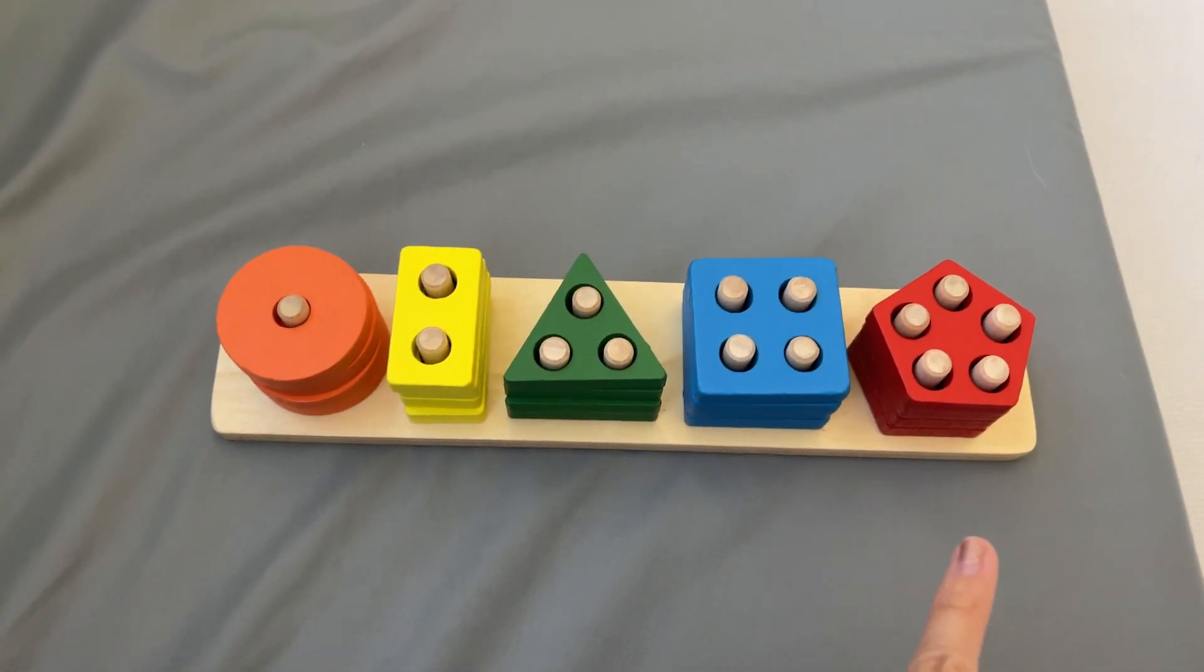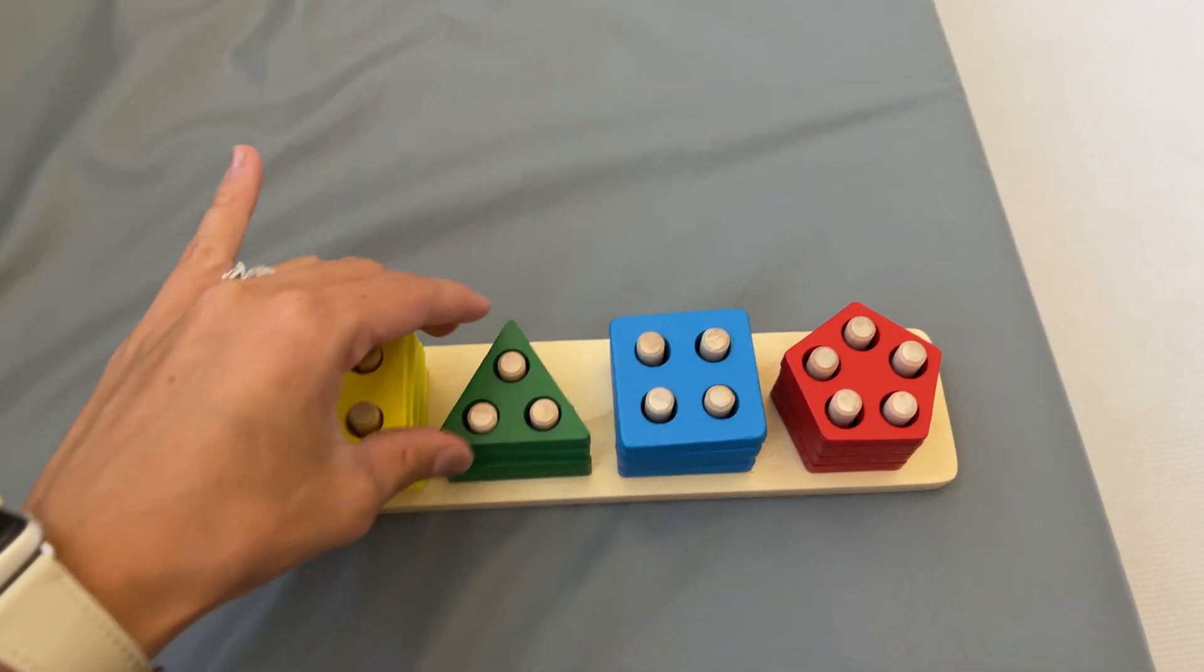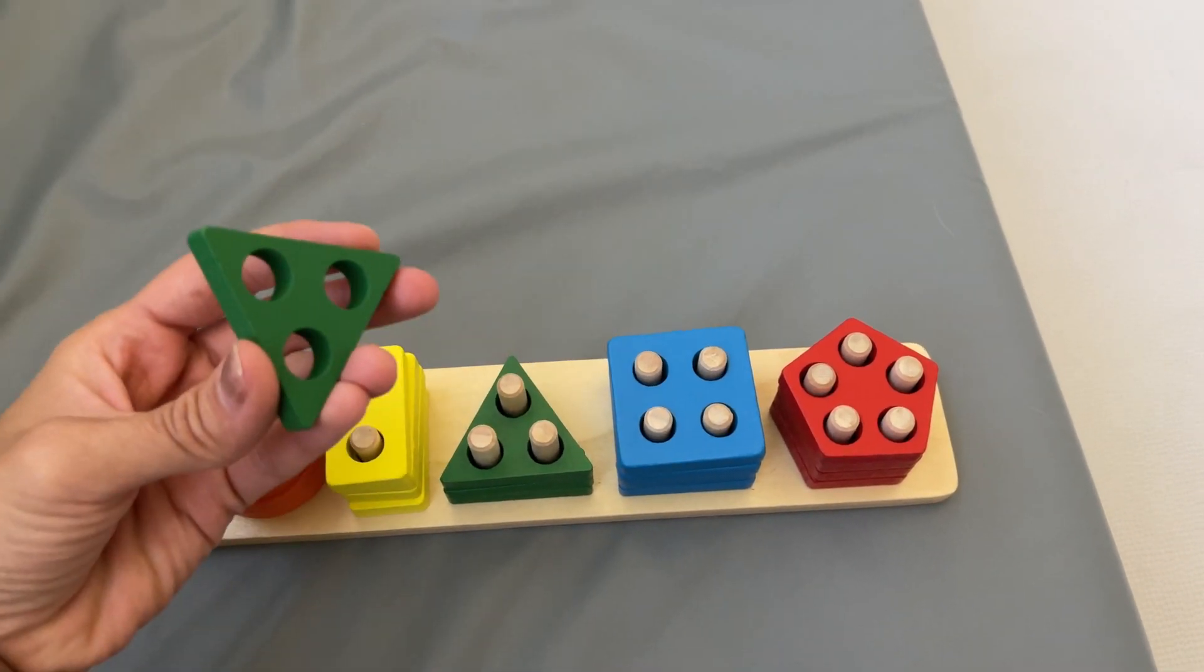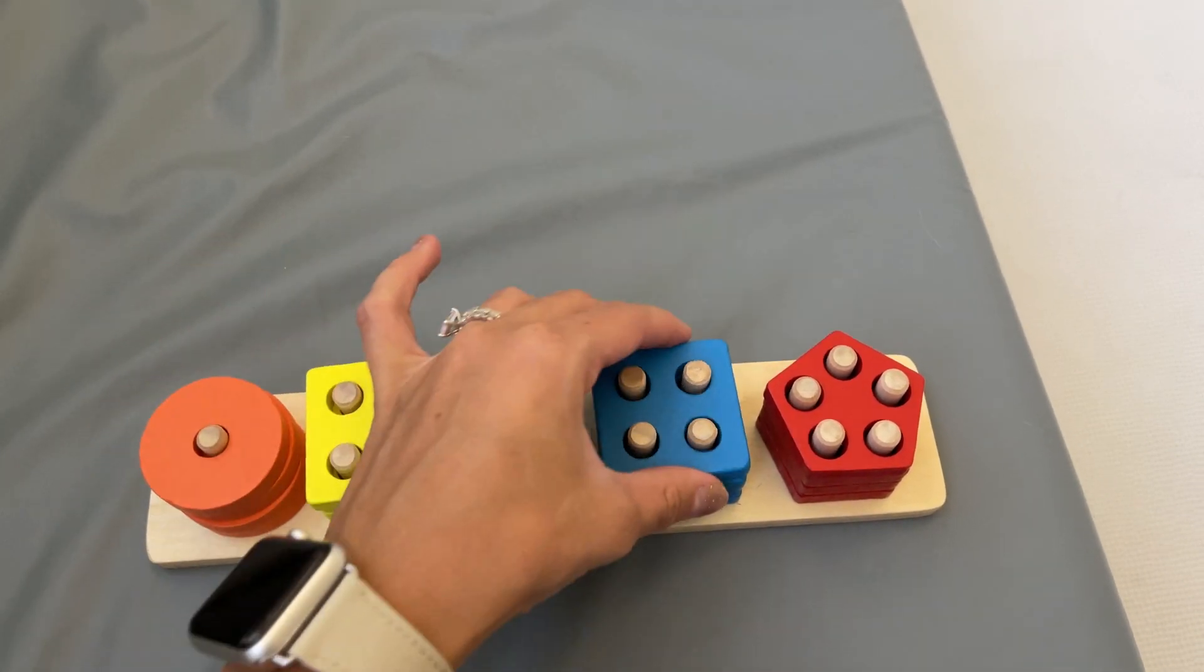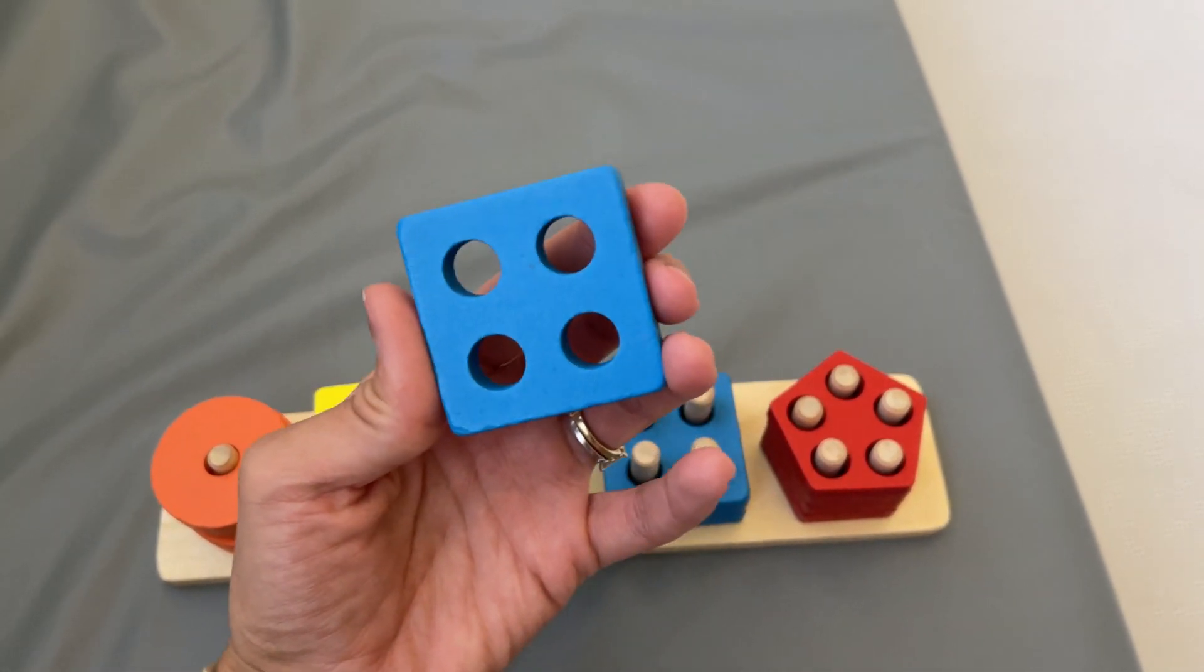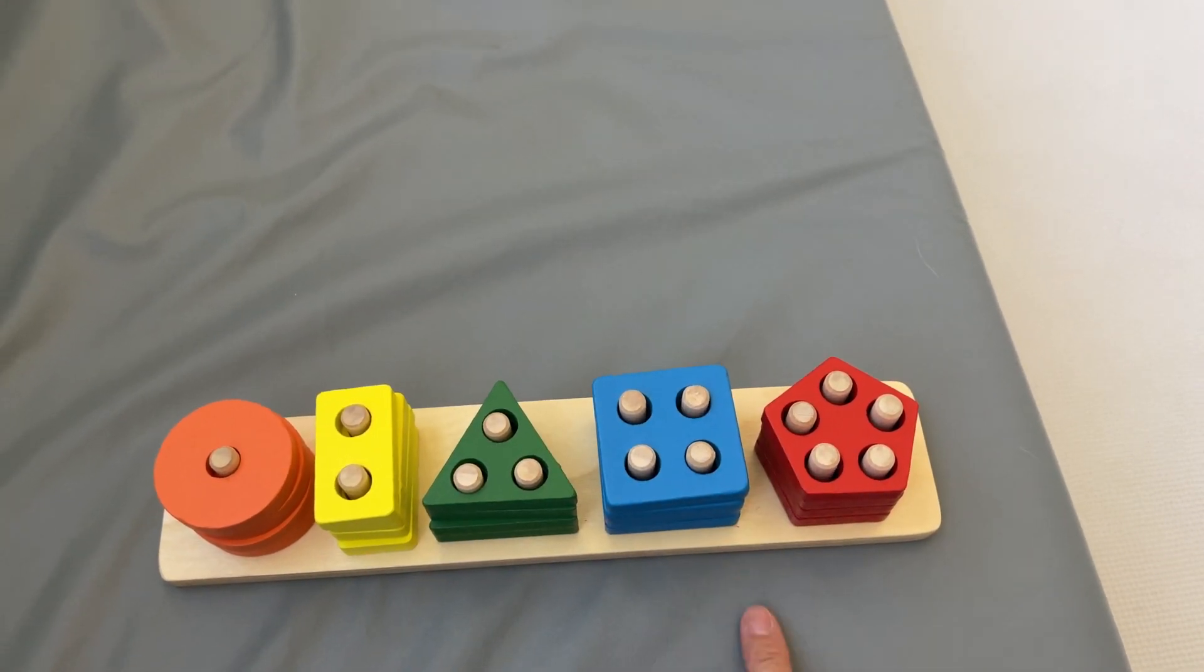It comes with five different shapes and colors, which is great. Not just for motor skills—I love these for motor skills because your baby, your toddler has to figure out how to place each piece in the little holes inside of the stacking toy.